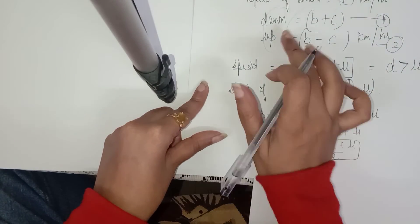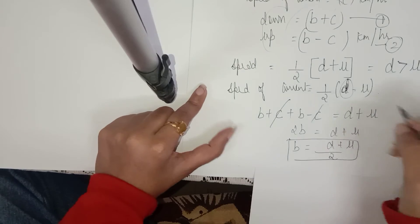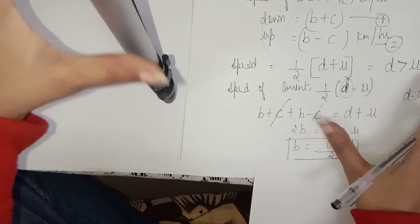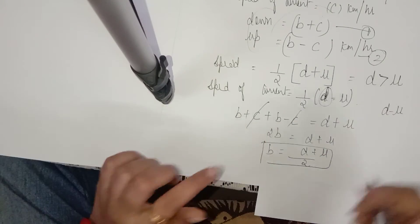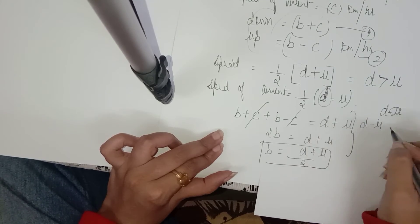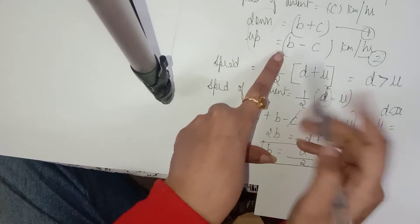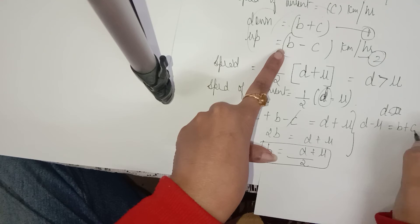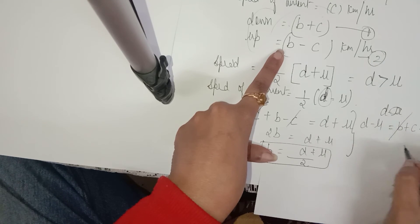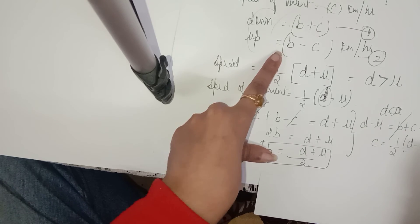To calculate the speed of current, we subtract both equations. D minus U equals B plus C minus B minus C. Cancel to get 2C. Then C equals half of D minus U. That is the speed of current.